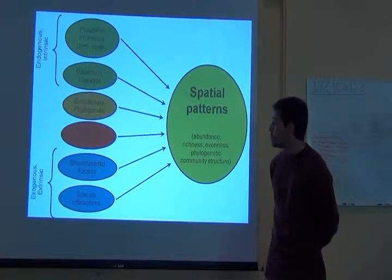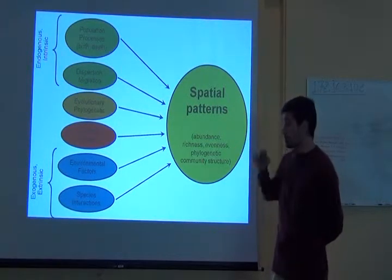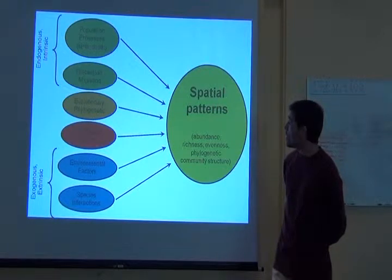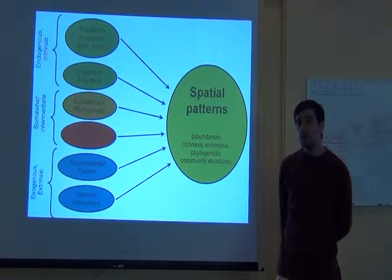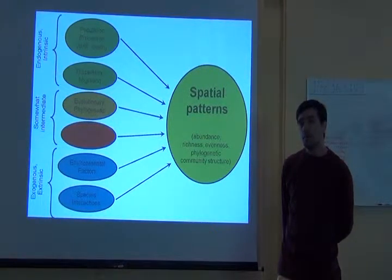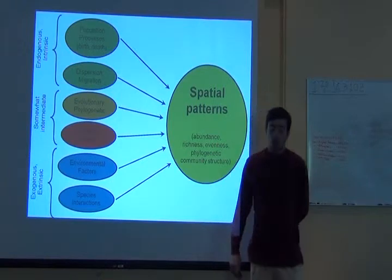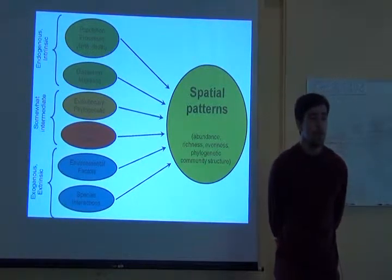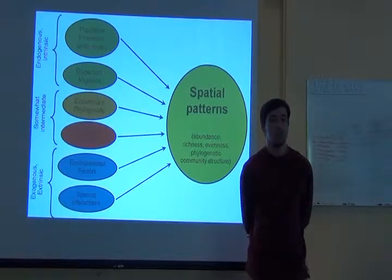How these affect species richness is not only a consequence of the biology of the species. These are extrinsic factors, and evolutionary phylogenetic factors and historical events are somewhat in between. It depends both on the biology of the species and characteristics of the environment and the time where the species is. So when we look at the spatial patterns and how we model it, how we study it, we have to be clear on what are the processes that we want to describe.